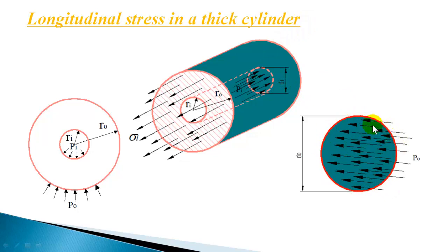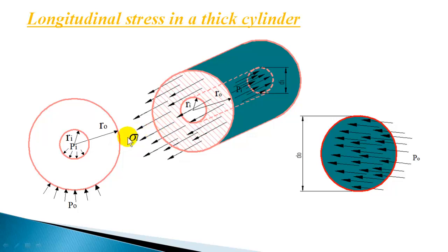This is the fluid pressure acting on the external surface of the cylinder end face. From inside, the fluid pressure is acting outward, and from outside, fluid pressure is acting in the opposite direction. The difference in force will create a stretching on the walls — this net force acts in the longitudinal direction, stretching the cylinder so that its length increases, inducing longitudinal strain on the cylinder walls.